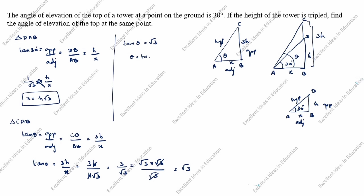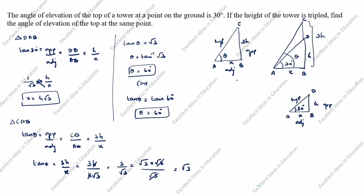Therefore θ equals tan inverse of √3, which gives θ equals 60°. So the angle of elevation of the top at the same point is 60 degrees. Thanks for watching this video.